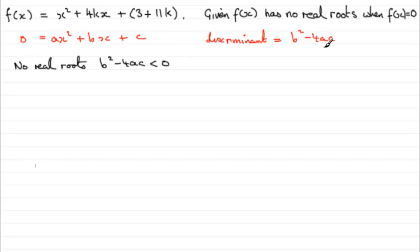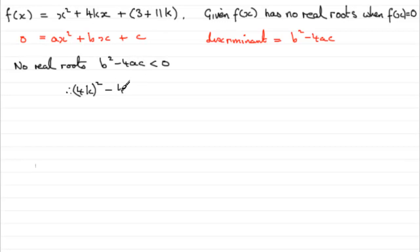So for no real roots, b squared minus 4ac must be less than zero. Now, what is b? Well, b is going to be 4k, so we have (4k) squared, minus 4 times the a value — the a is 1 — and then c is 3 plus 11k. So that whole expression must be less than zero.